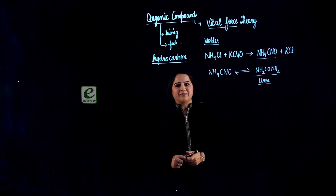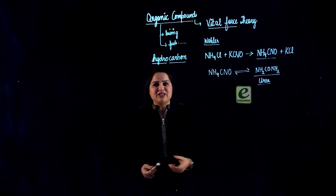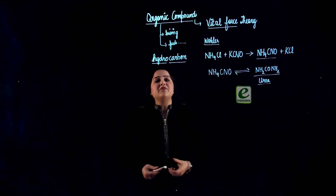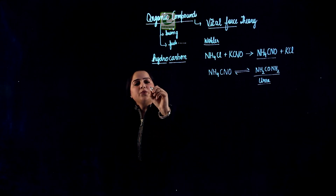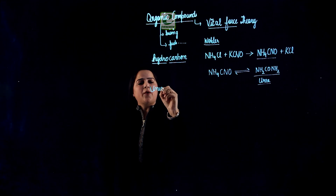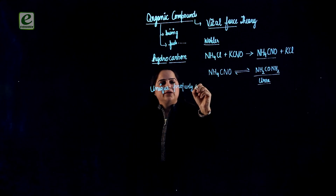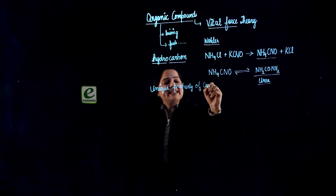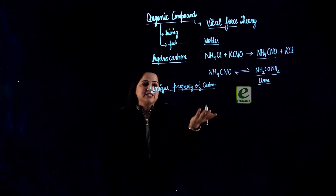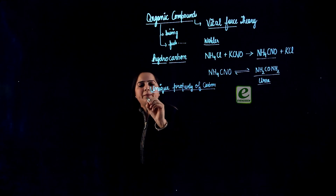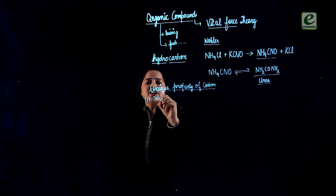After the formation of urea, it gave a boost to organic scientists who started working on organic chemistry, and today we have millions of organic compounds which exist in nature. So what was the unique property of carbon which led to the formation of so many compounds that a different chemistry known as organic chemistry had to be derived? Basically it comes down to three points. The first point was tetra-covalency.